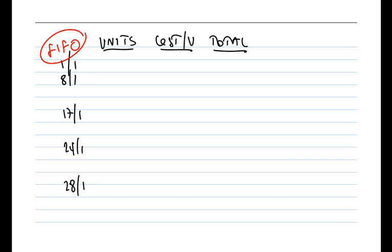First In, First Out means we're selling the oldest units first — the first that went into the storeroom are the first to come out. I'm going to use a sensible approach, looking at transactions in chronological sequence starting with the earliest. The earliest transaction was the opening inventory: on January the 1st, 500 units, each valued at £10 per unit — a total of £5,000. We arrive at that £10 by taking the £5,000 total divided by 500 units.